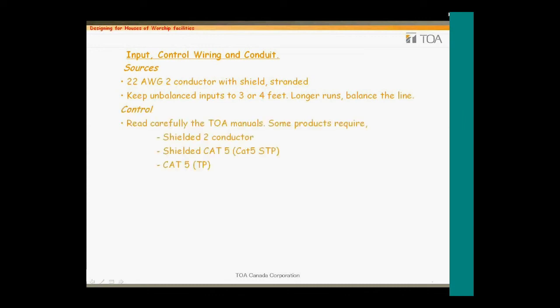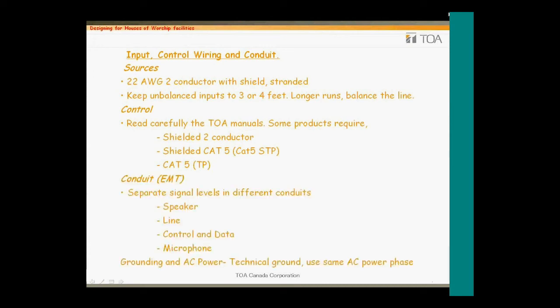Control wiring: check the documentation that comes with the TOA products, as not all wiring required for control is the same. Especially watch out for CAT5 requirements that are shielded — this is not a common type of wiring and may require a special order. When specifying conduit, keep in mind the different signal levels that require separate conduit systems. Do not mix unlike signal levels, or you may be in for a big surprise. One last thing on wiring is grounding: on large systems, have the electrician provide an isolated single ground point for the equipment rack. All grounding in the rack should be referenced to this single ground point to help prevent ground loop problems. Also have the electrician supply all electrical feeds from the same phase of the AC feed. In summary: same ground, same phase.